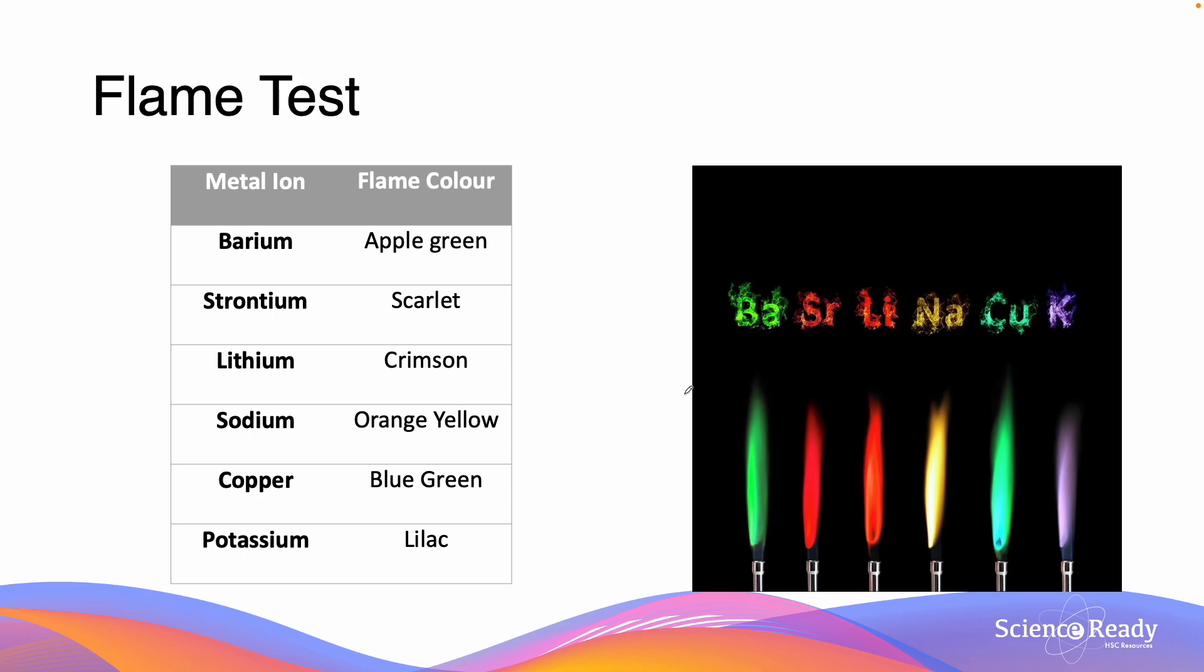Here's a table which shows the different colours produced by some of the metal ions. Barium is going to give us this apple green colour, strontium will give us scarlet, lithium will give us crimson, sodium will give us this orange yellow colour, copper will give us blue green, and potassium will give us this lilac colour.